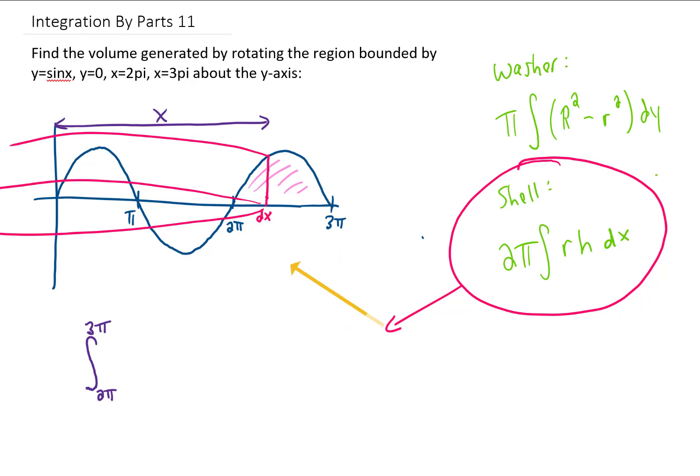So long story short, our radius is just x. The height of each one of these cylindrical shells is just given by the function sine of x. So this turns out pretty nicely. This is actually an integration by parts integral.